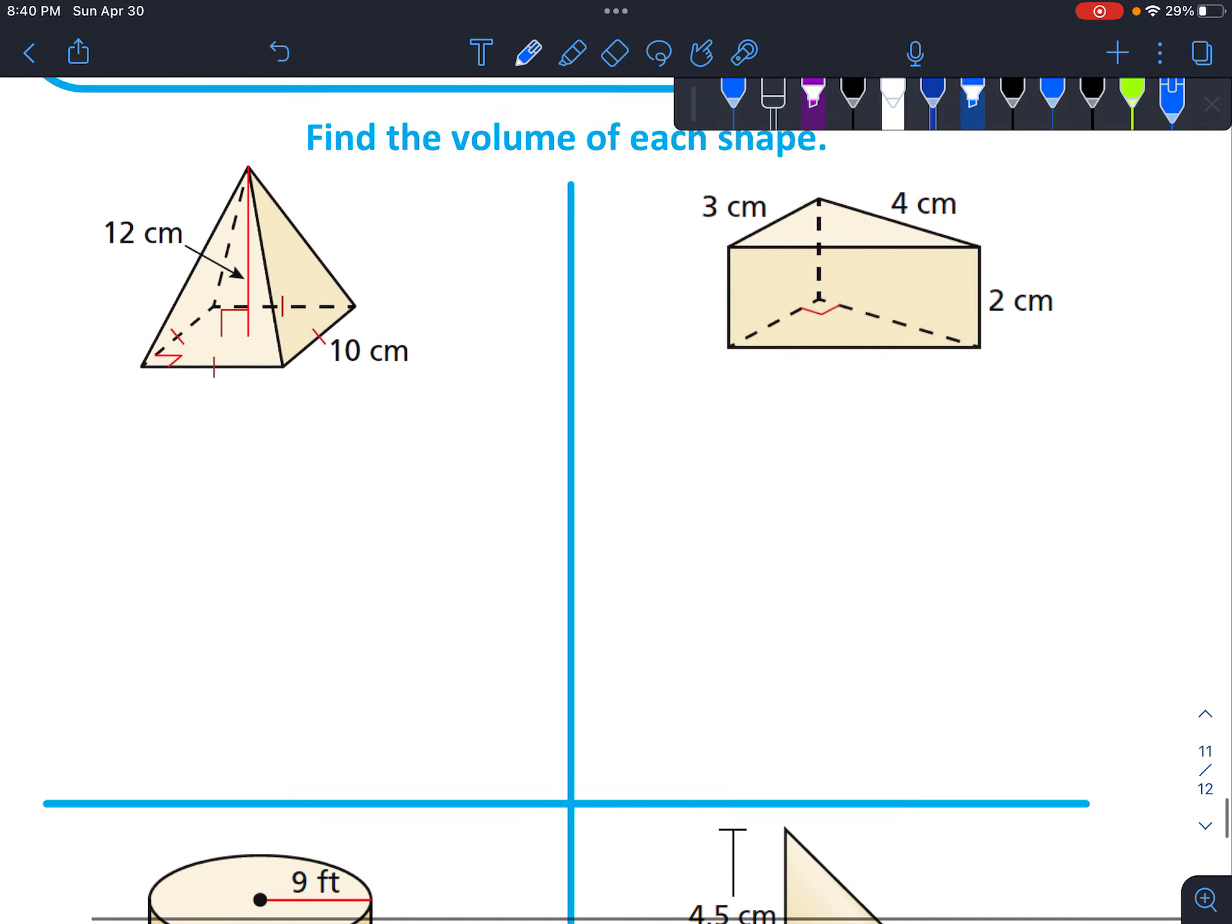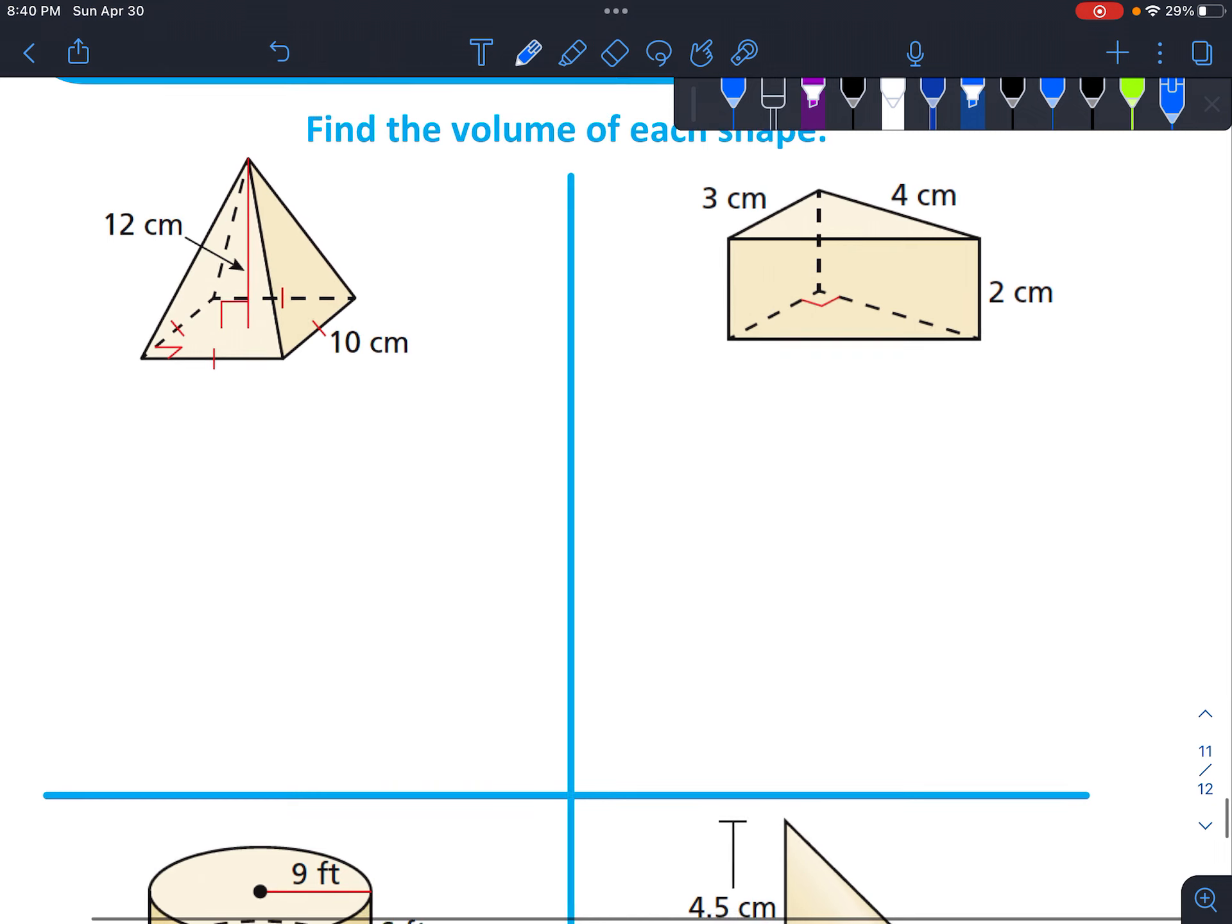We're going to just use the right formula for each of these. Notice this time we are given a pyramid with a square base. Since it's a square, we know it's 10 times 10 for the base. We're going to say volume equals, this is one of the ones where we multiply by one-third, and the base is going to be 10 times 10, and the height is 12. Notice multiplying by one-third is the same as dividing by 3. I find it a little more concise to write it that way.